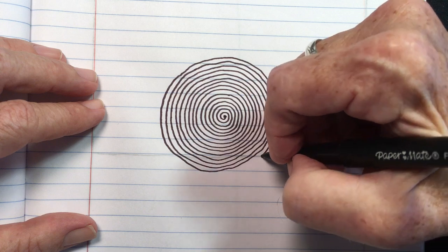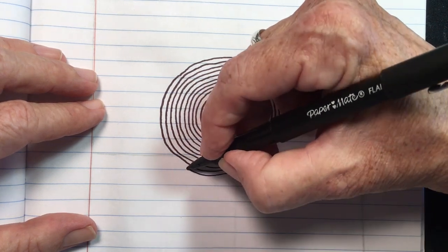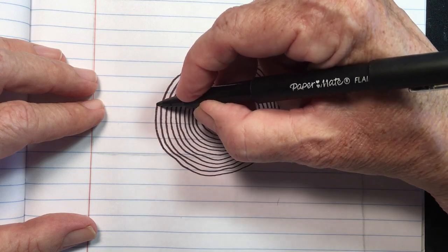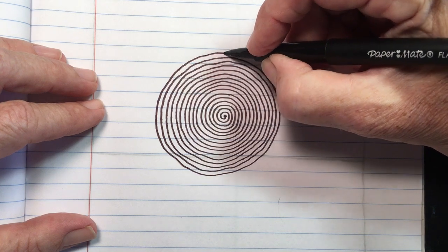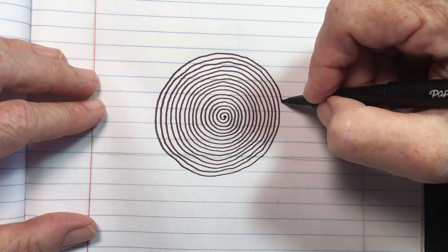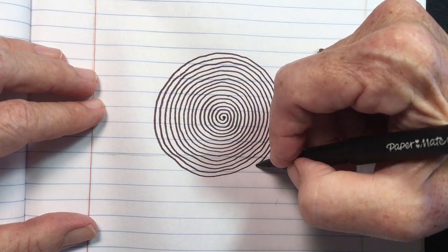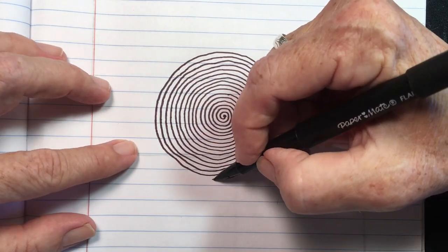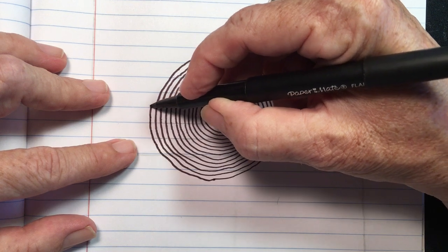And move it back up into your shoulders, down your arms, both arms to your elbows, your forearms. Put your focus in your wrists, the palms of your hands, your fingers, your thumbs.